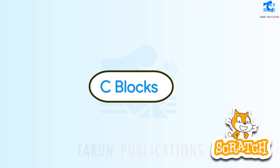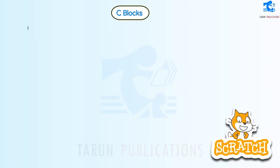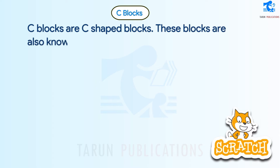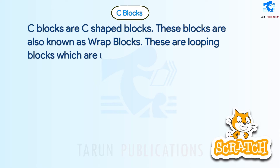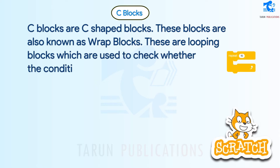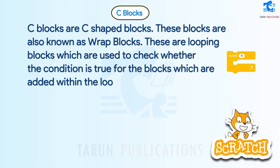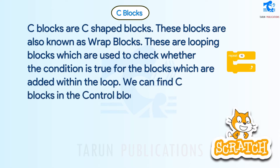C Blocks are C-shaped blocks, also known as wrap blocks. These are looping blocks which are used to check whether the condition is true for the blocks added within the loop. We can find C blocks in the control blocks category in Scratch.